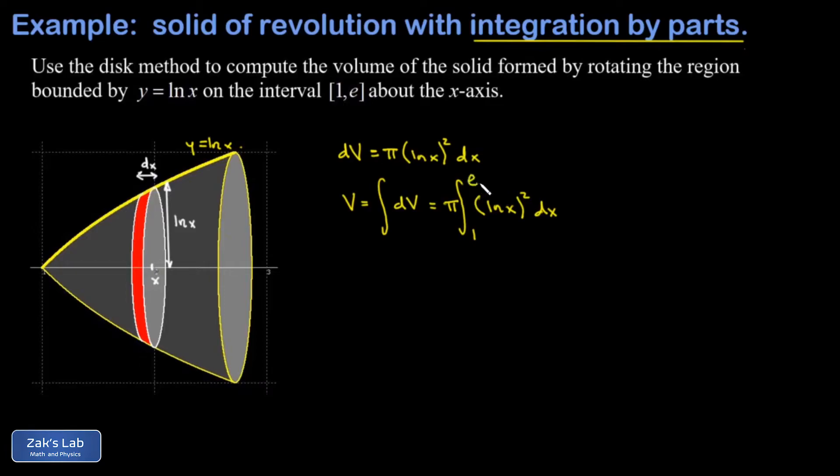Now this integral of the natural log function squared, that's where we have to use integration by parts. I'm going to let u be equal to the natural log of x all squared. The motivation behind this is that I see this is going to create a simpler function.